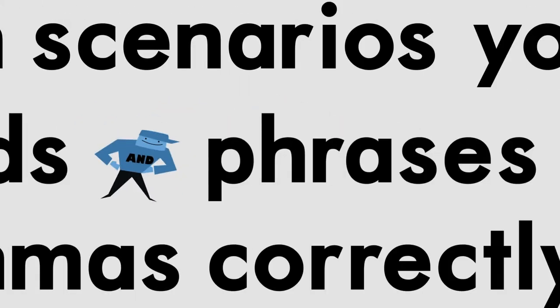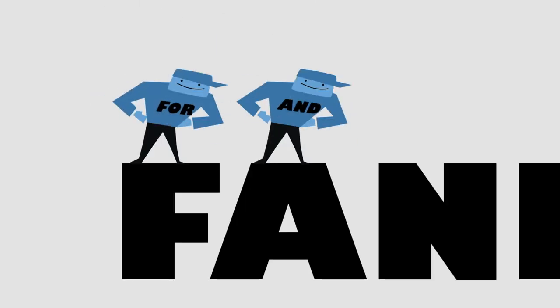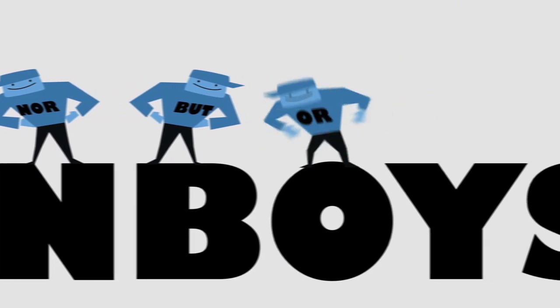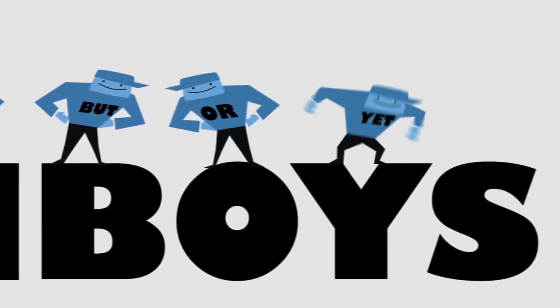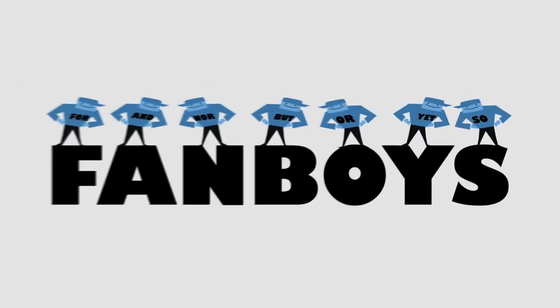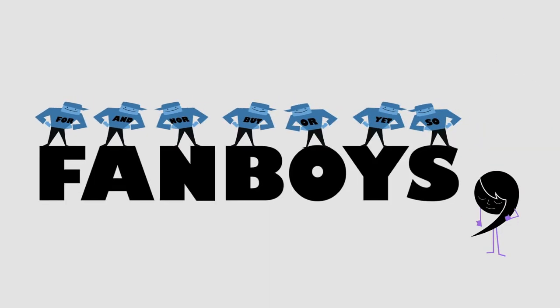You can easily remember the conjunctions by remembering the acronym FANBOYS: for, and, nor, but, or, yet, so. Because they're so small, more often than not they require the help of a comma, but not always.